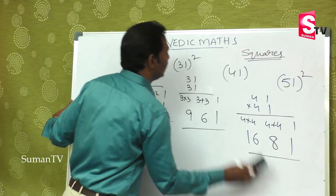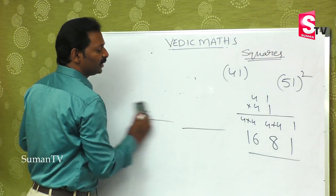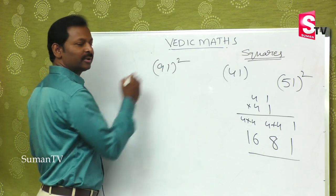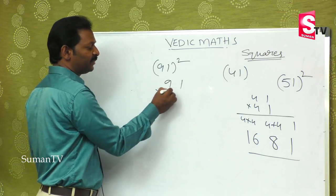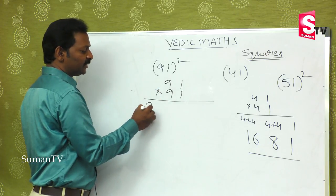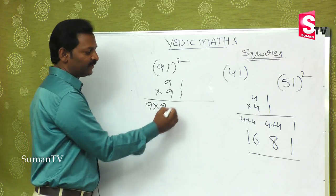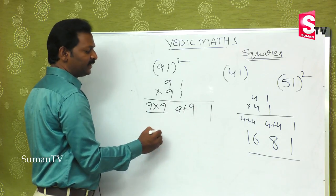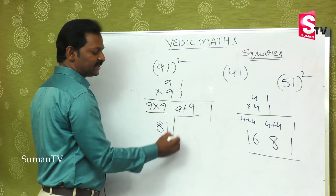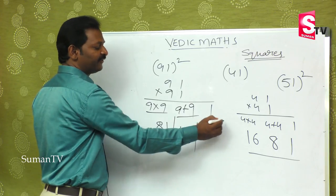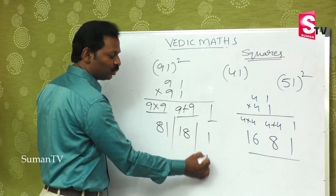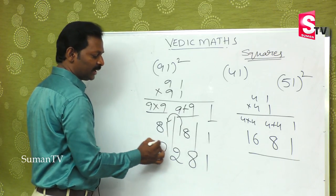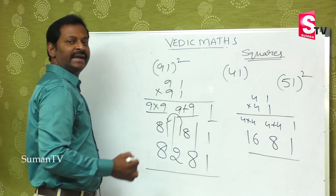For a bigger number like 91 — which is the reverse of 19 — we compute 91 into 91. First, 9 into 9 is 81, then 9 plus 9 is 18, then 1. Balancing: keep 1, carry 8 from 81 adds to 18 giving 19, keep 9, carry 1 adds to 8 giving 9. Wait — rearranging: keep 1, then balance 1 from 81 with 18: 18 plus 1 is 19... final answer working out to 8281.